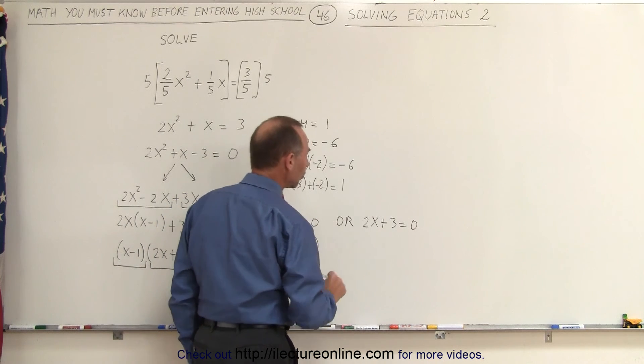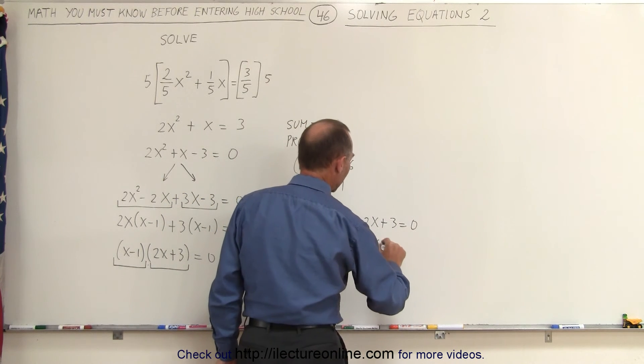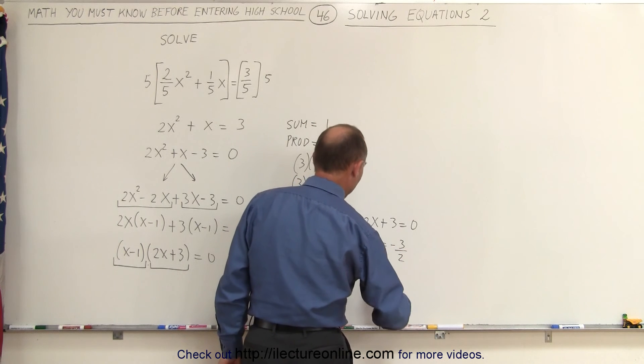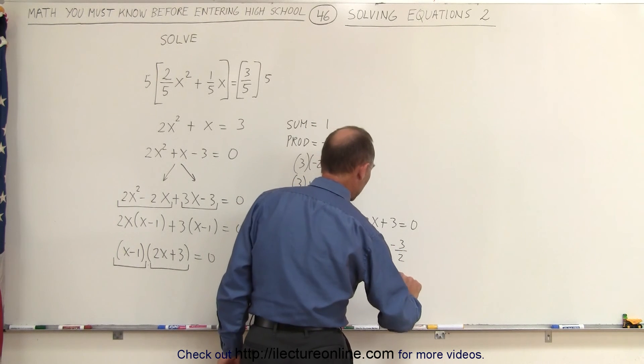And the second solution is, we get 2x is equal to minus 3, divide both sides by 2, and we get x is equal to minus 3 over 2.